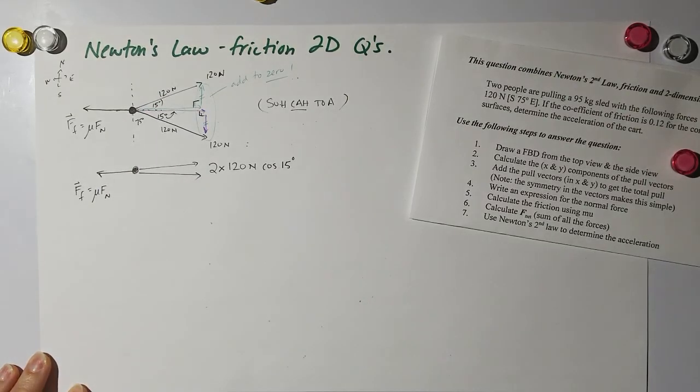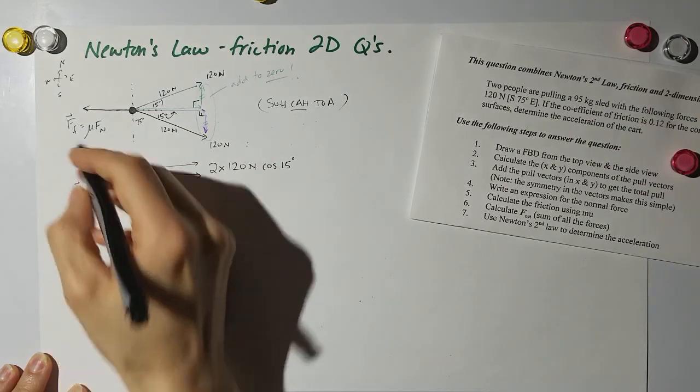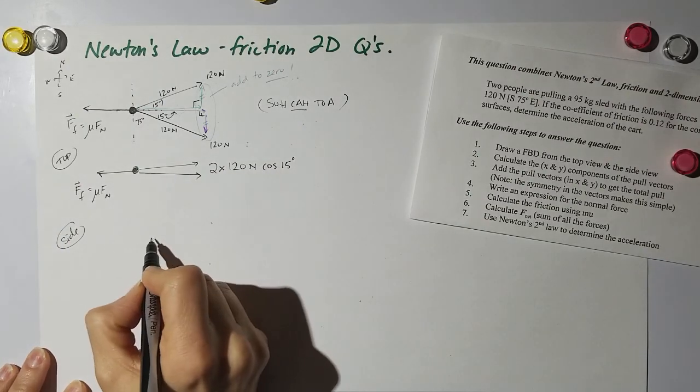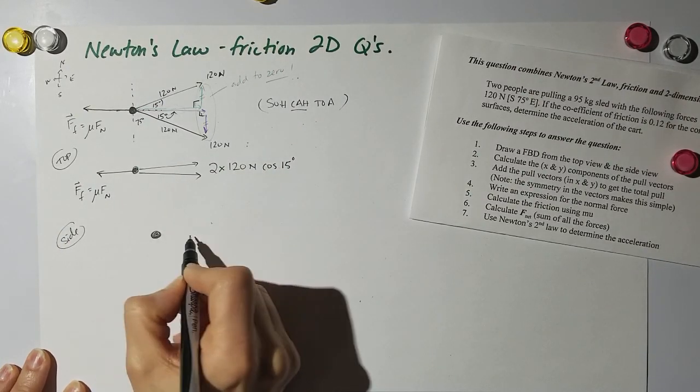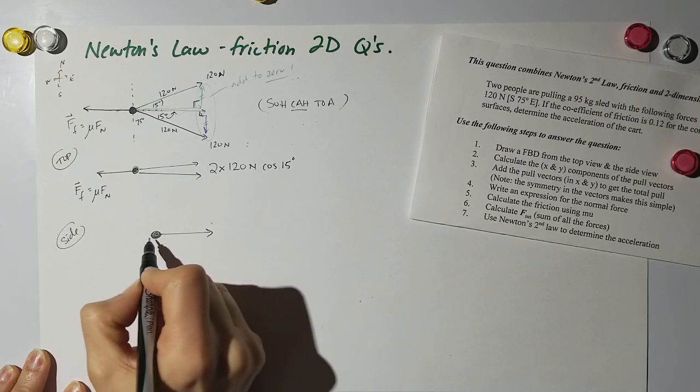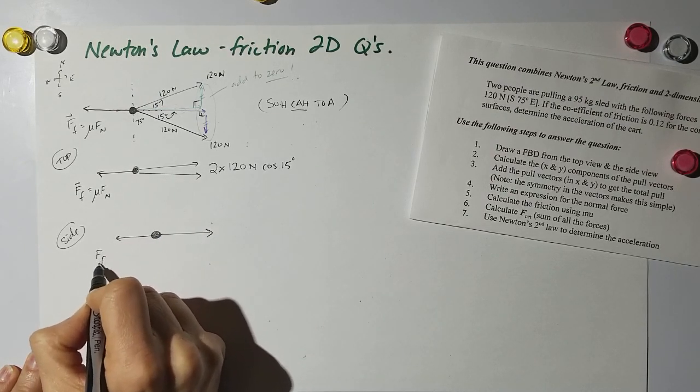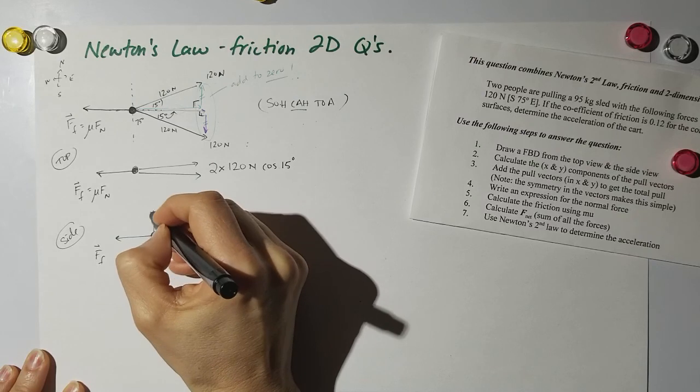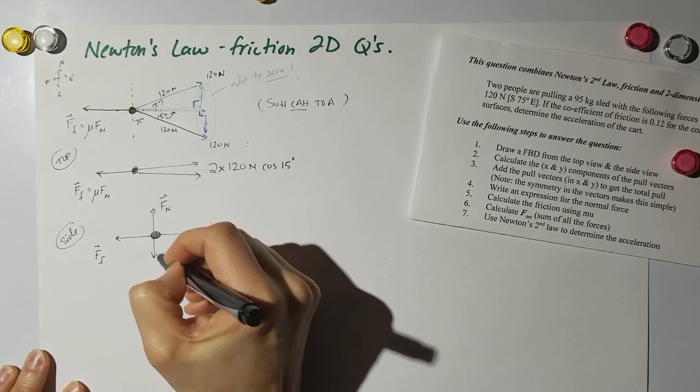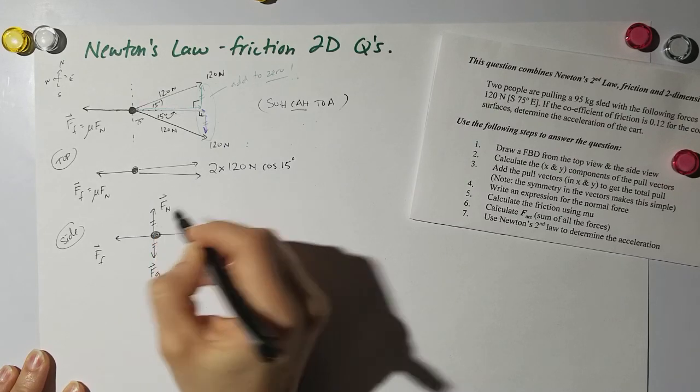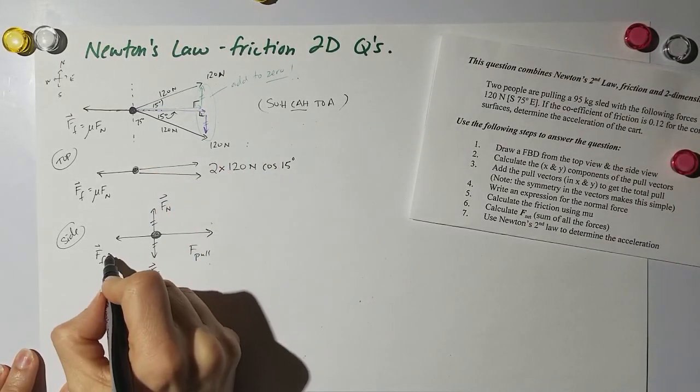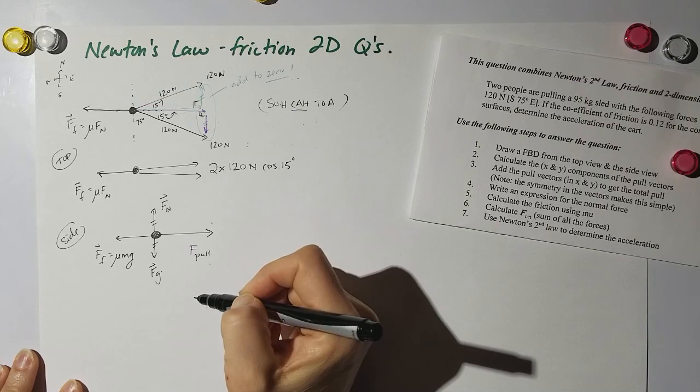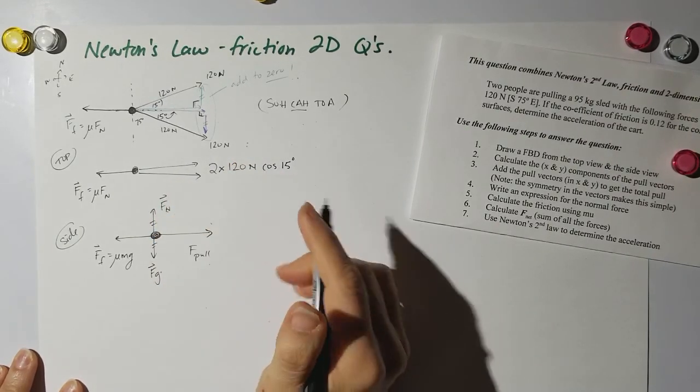Now when I do the side view, here's my cart, here's my poles, and here's my friction. I'm going to do F_pole. I also have the normal force and I have the force of gravity, and those are going to be equal because it's not moving up or down. So the force of friction is actually mu m g, because F_g equals F_n in this case.